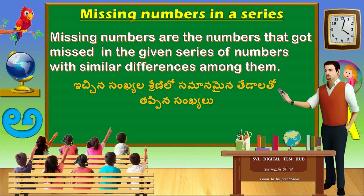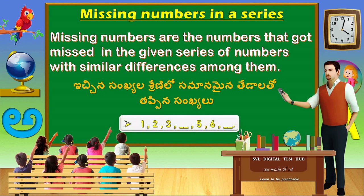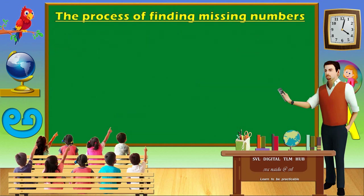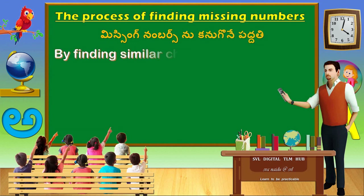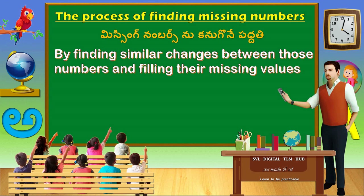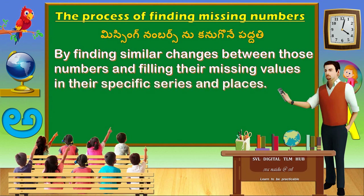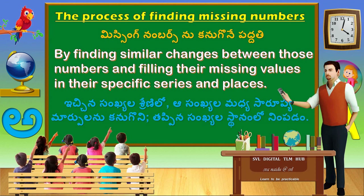Let's learn about missing numbers. For example: 1, 2, 3, dash, 5, 6, dash. The process of finding missing numbers is by finding similar changes between those numbers and filling their missing values in their specific series and places.